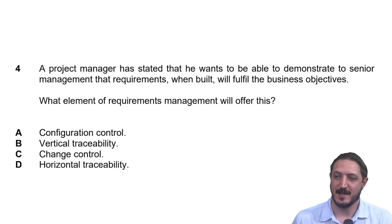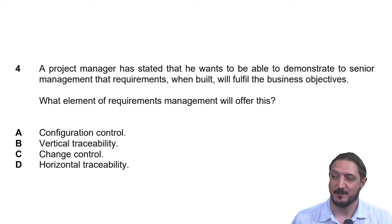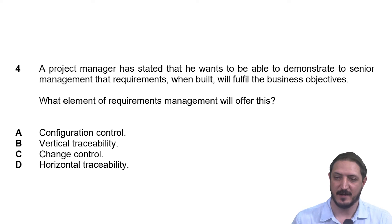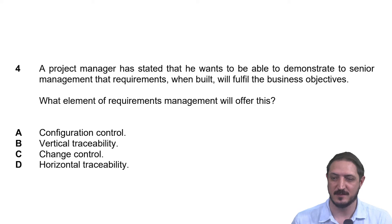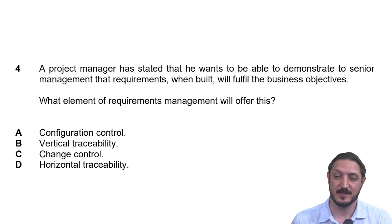So it says: a project manager has stated that he wants to be able to demonstrate to senior management that requirements, when built, will fulfill the business objectives. The instructions or the real question is: what element of requirements management will offer this? And we've got four options: configuration control, vertical traceability, change control, and horizontal traceability.